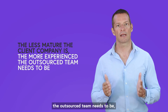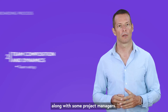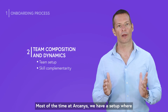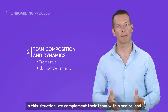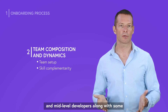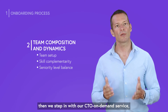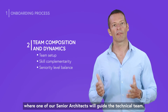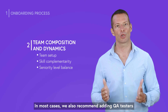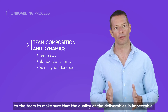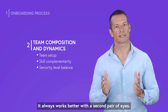The less mature the client company is, the more experienced the outsourced teams need to be, sometimes with senior architects leading the project along with some project managers. Most of the time at Arcanis, we have a setup where the client already has a CTO or a strong team of senior developers. In this situation, we complement their team with a senior lead and mid-level developers along with some additional on-demand services whenever needed. But when the client has weak technical skills, we step in with our CTO on-demand service where one of our senior architects will guide the technical team. In most cases, we also recommend adding QA testers to the team to make sure that the quality of the deliverables is impeccable. For over 10 years in the business, we've learned that it always works better with a second pair of eyes.